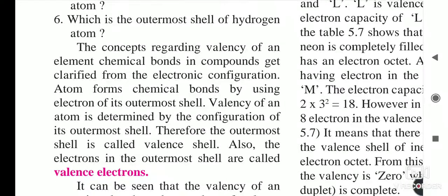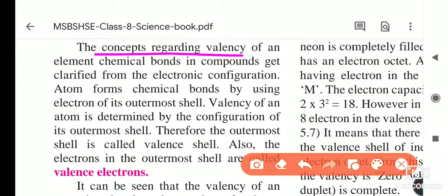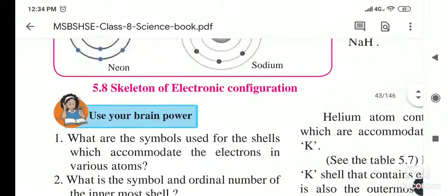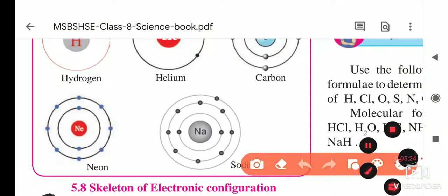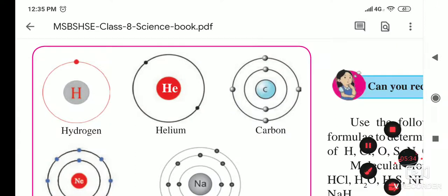The concept of valency: chemical bonds in compounds get clarified from the electronic configuration. Atoms form chemical bonds by using electrons of the outermost shell. In a chemical reaction, always the outermost shell electrons take part. For example, let's look at the structure of H₂.